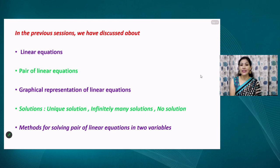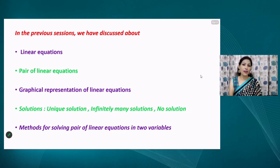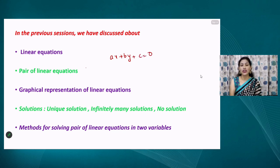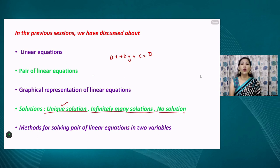We have discussed linear equations in one variable and in two variables, and after that we started the topic from class 10 — pair of linear equations in two variables. If there is one equation, there are infinitely many solutions, but if there are two equations — a pair of linear equations — there can be a unique solution, infinitely many solutions, or no solution.